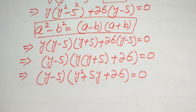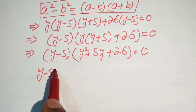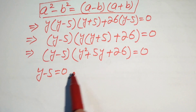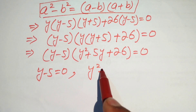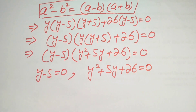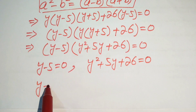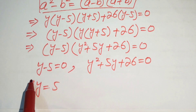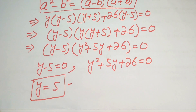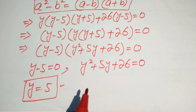We split into two cases. Case 1: y minus 5 equals zero, giving y equals 5, which is clearly a real number. Case 2: y squared plus 5y plus 26 equals zero. We now check whether this quadratic has real roots using the discriminant.